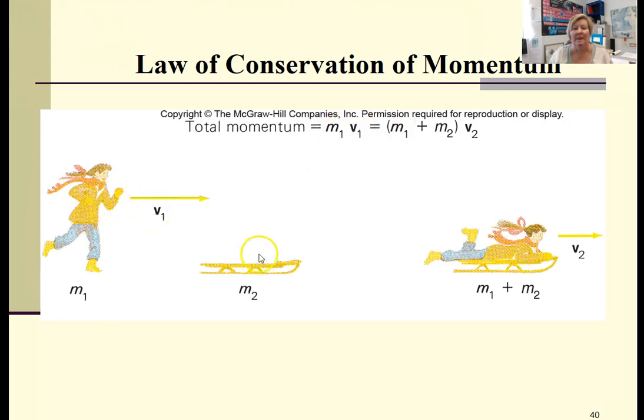This is not interacting yet, so we don't have to consider it. Now as the girl jumps onto the sled, we now have the mass of the sled that's going to be incorporated along with the person's mass, so we have m1 plus m2, and we multiply it by the velocity.